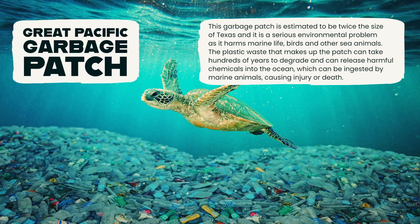One real example of how waste generation impacts the environment is the Great Pacific Garbage Patch, also known as the Pacific Trash Vortex. It's a large area of the Pacific Ocean where marine debris, mostly plastic, has accumulated due to ocean currents. This garbage patch is estimated to be twice the size of Texas, and it's a serious environmental problem as it harms marine life, birds, and other sea animals. It also affects the fishing industry and poses a significant threat to the ocean ecosystem.